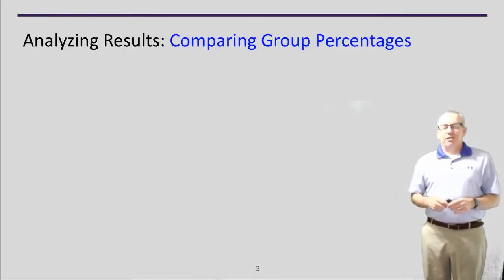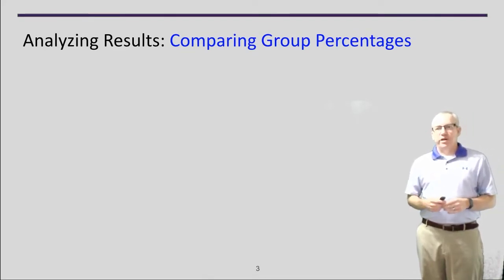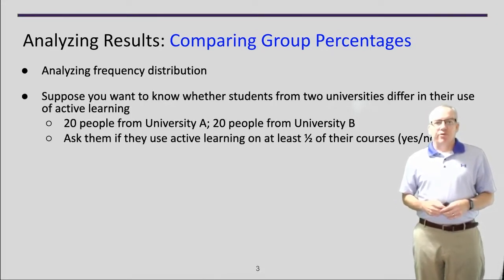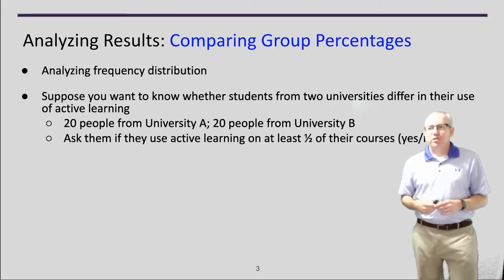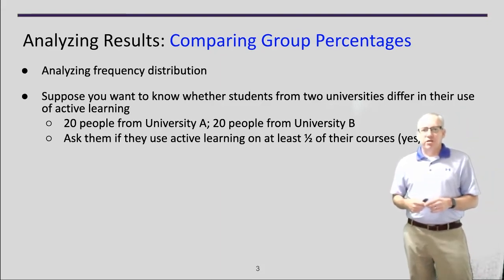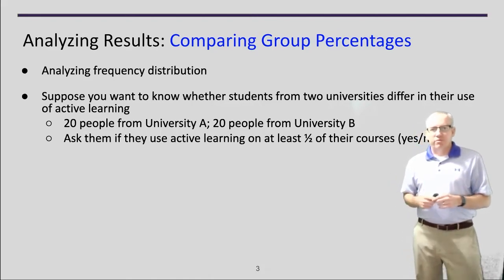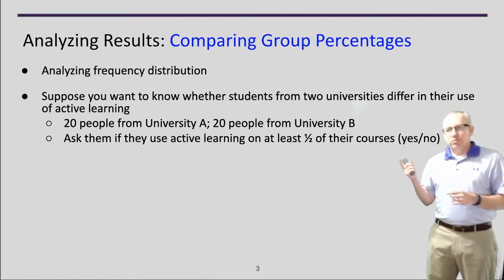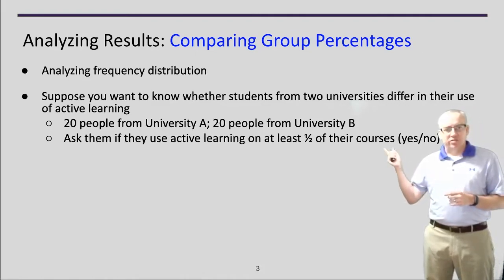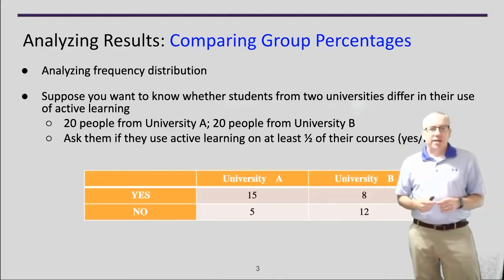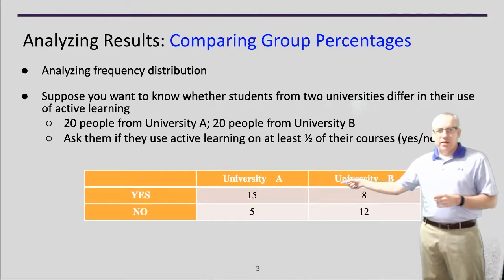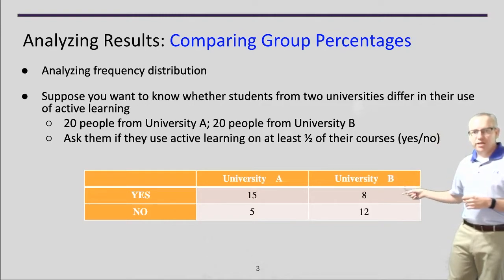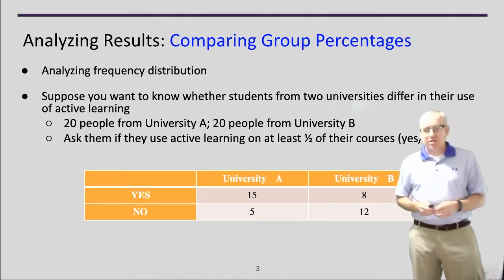As a brief introduction to analyzing results, we look at analyzing frequency distributions. For example, suppose we want to know whether students from two universities differ in their use of active learning. Say we have 20 people from University A and 20 from University B, and we ask them if they use active learning in at least half of their courses — yes or no. From University A, 15 say yes and 5 say no; from University B, 8 say yes and 12 say no.